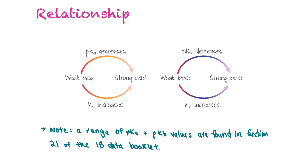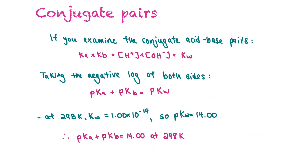For conjugate acid-base pairs, Ka times Kb equals the concentration of hydrogen ions times the concentration of hydroxide ions, which equals Kw. Taking the negative log of both sides means pKa plus pKb equals pKw. Because Kw is 1.00 × 10⁻¹⁴, pKw equals 14, so pKa plus pKb equals 14 at 298 Kelvin — just like pH plus pOH equals 14.